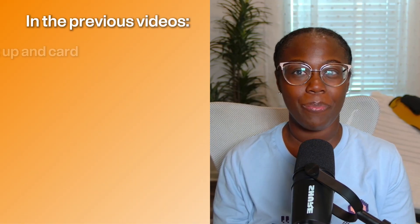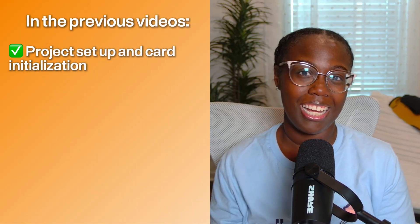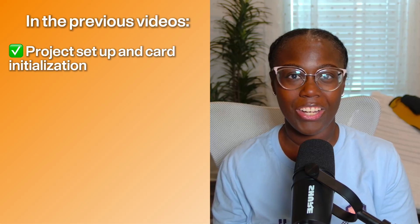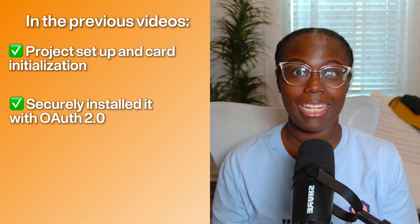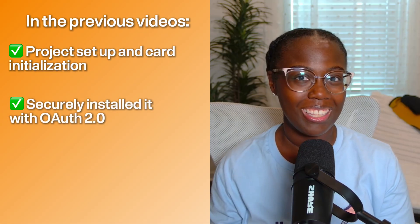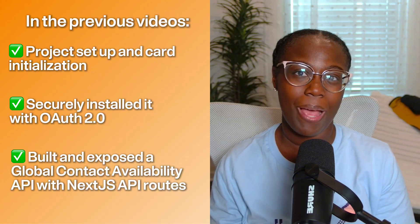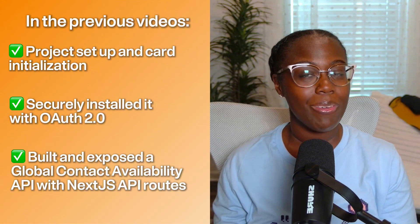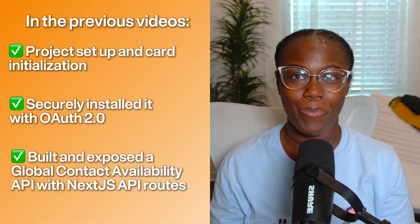This is the fourth video in our series of building a custom public app card with HubSpot's UI extensions from scratch. In the previous videos, we've covered setting up our project and initializing our public app card, then securely installed it by diving deep into OAuth, and finally built and deployed our Next.js backend, complete with powerful API endpoints.